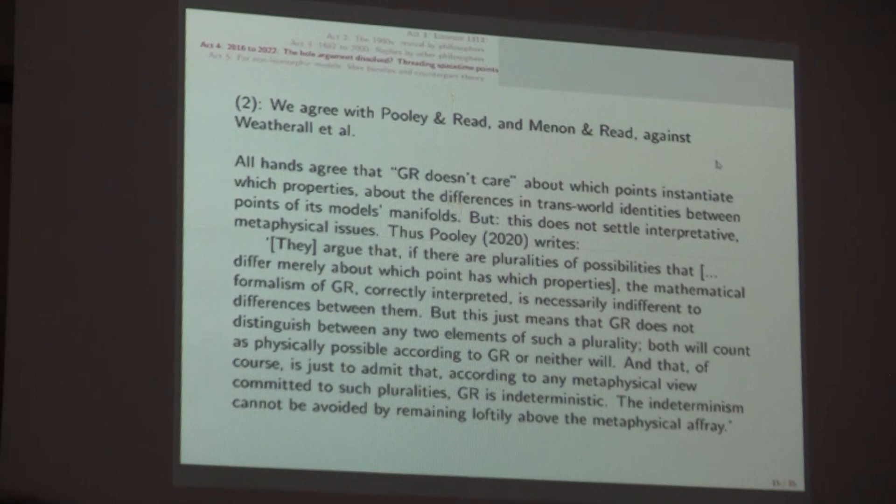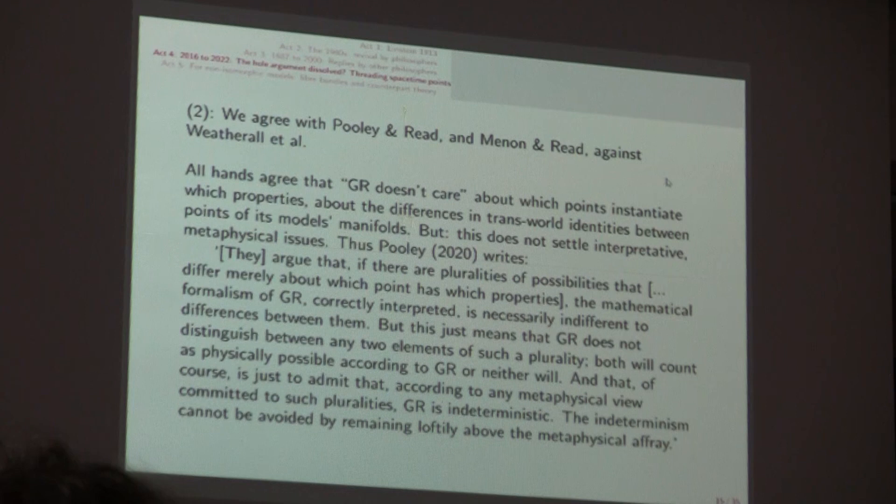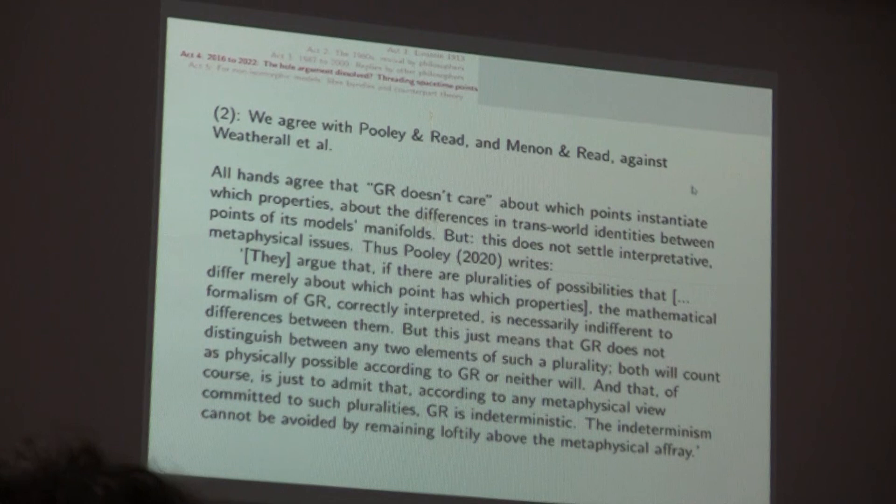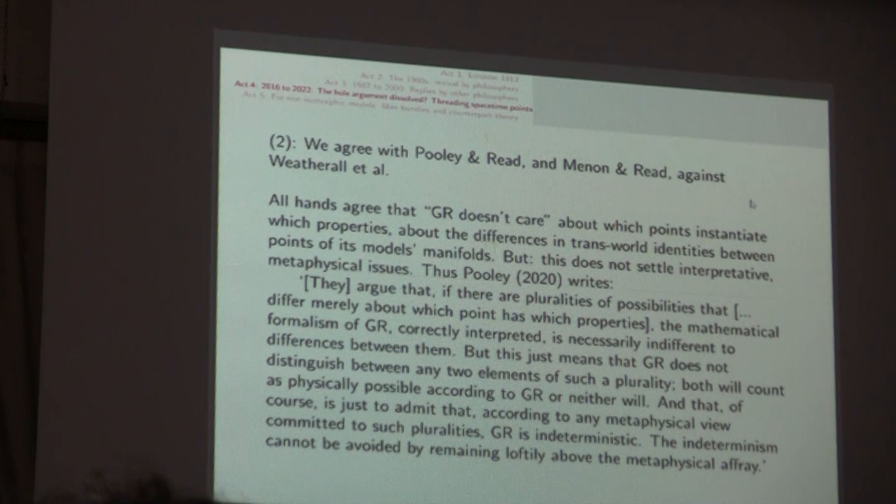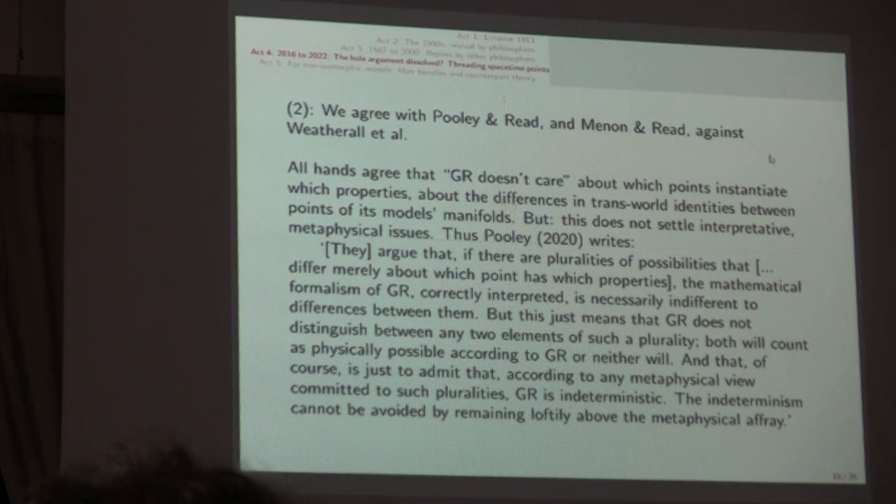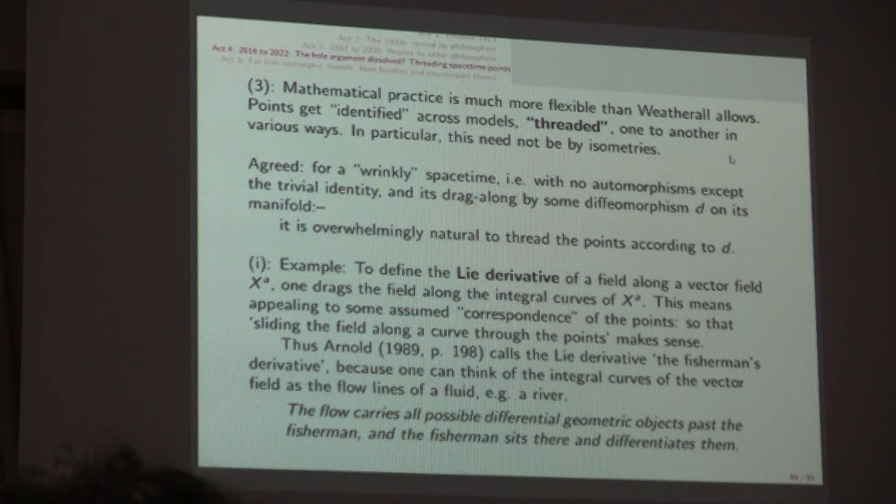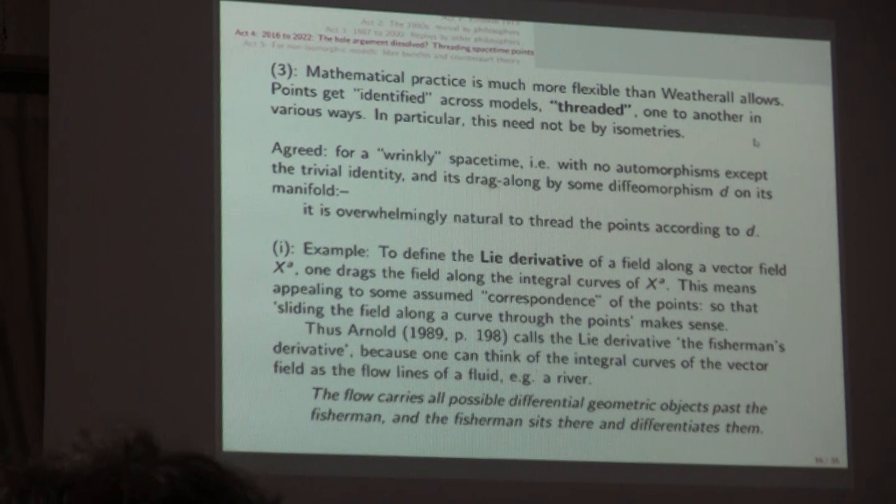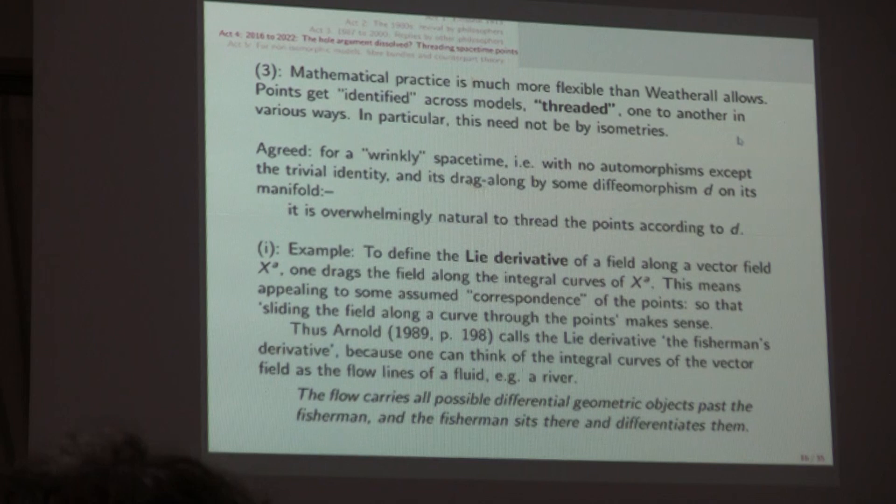There's been criticism of Weatherall and his followers, in particular by Pooley and Read and by Menon and Read. Everybody agrees that GR doesn't care about which points instantiate which properties, about the differences in the so-called transport identities between points in models manifolds, but that doesn't settle interpretative or philosophical issues, so you can still raise the philosophical issue. Oliver Pooley writes you should just dismiss the hole argument saying that you can remain loftily above the metaphysical fray. You've got to get down and do the philosophical dialectic.